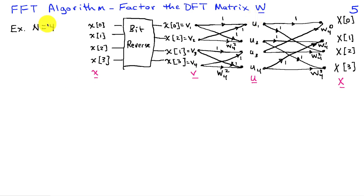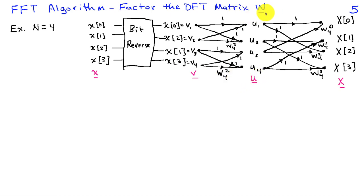To illustrate this, we'll use N equals 4. I've sketched an FFT diagram for this case. Recall the first step is to rearrange the order of the input — this is a power-of-2 decimation-in-time FFT algorithm. We collect values at different stages into vectors: lowercase x is the time signal, V is the bit-reversed version with elements V1, V2, V3, and V4.